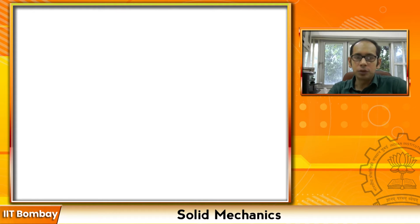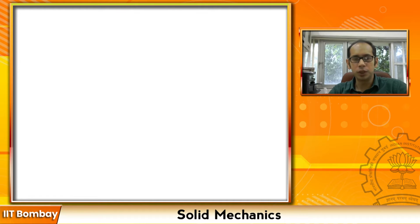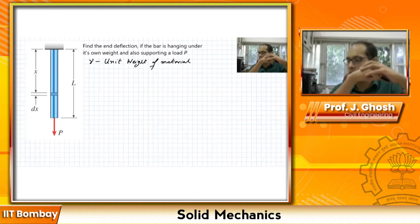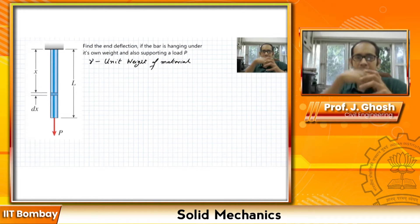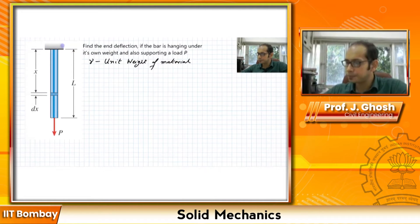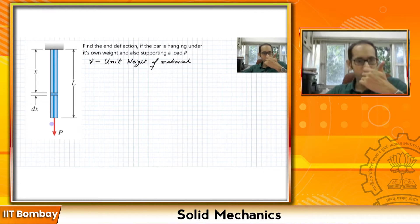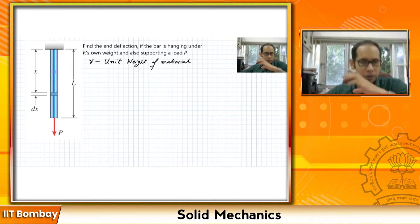Now that we have understood non-uniform axial loading, we will go ahead and solve a particular problem. The problem is that you have a bar which is hanging from the top, clamped at the top, and being pulled by a force P. But unlike the problems we looked at before, this bar now has some amount of self-weight.